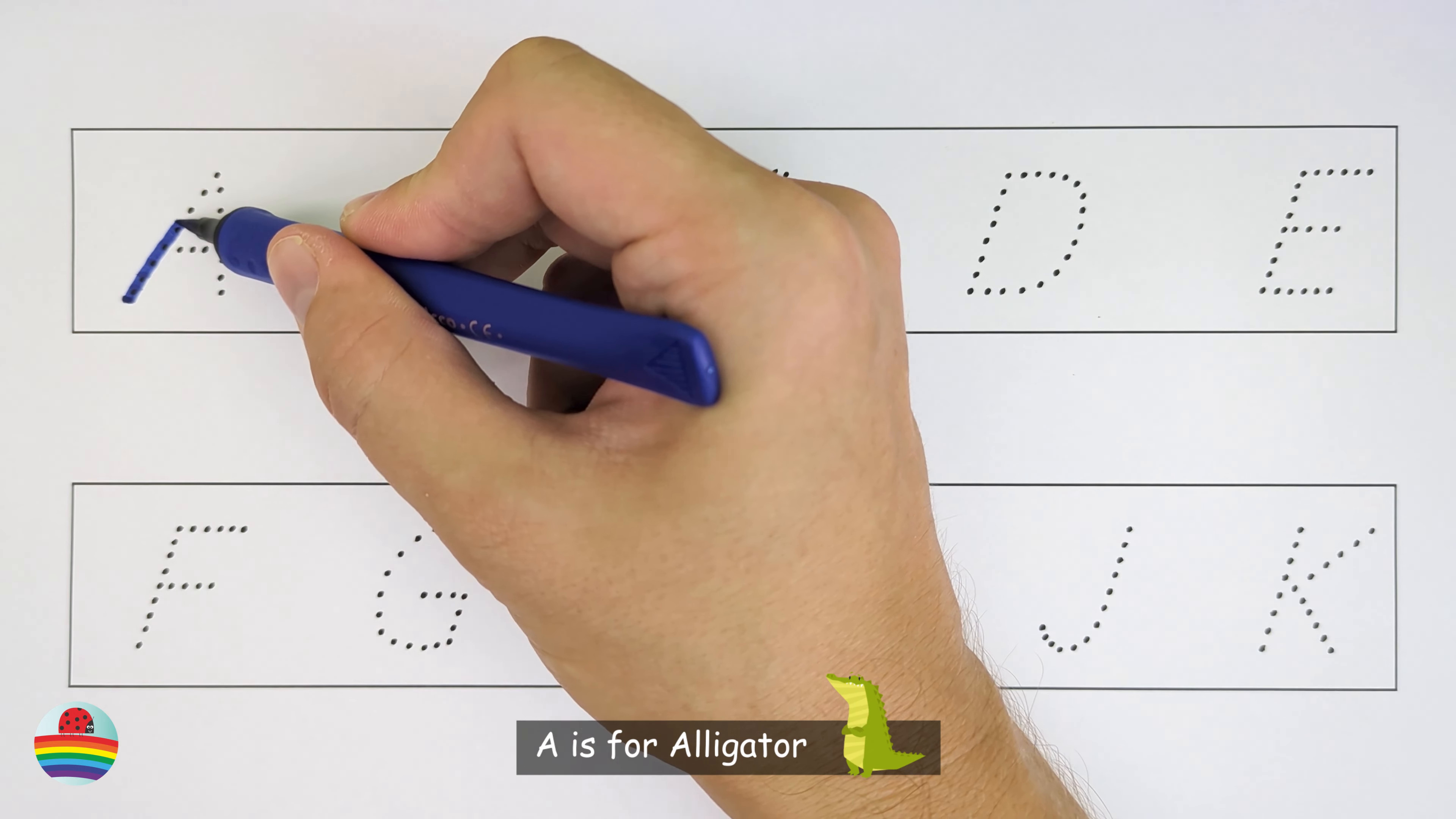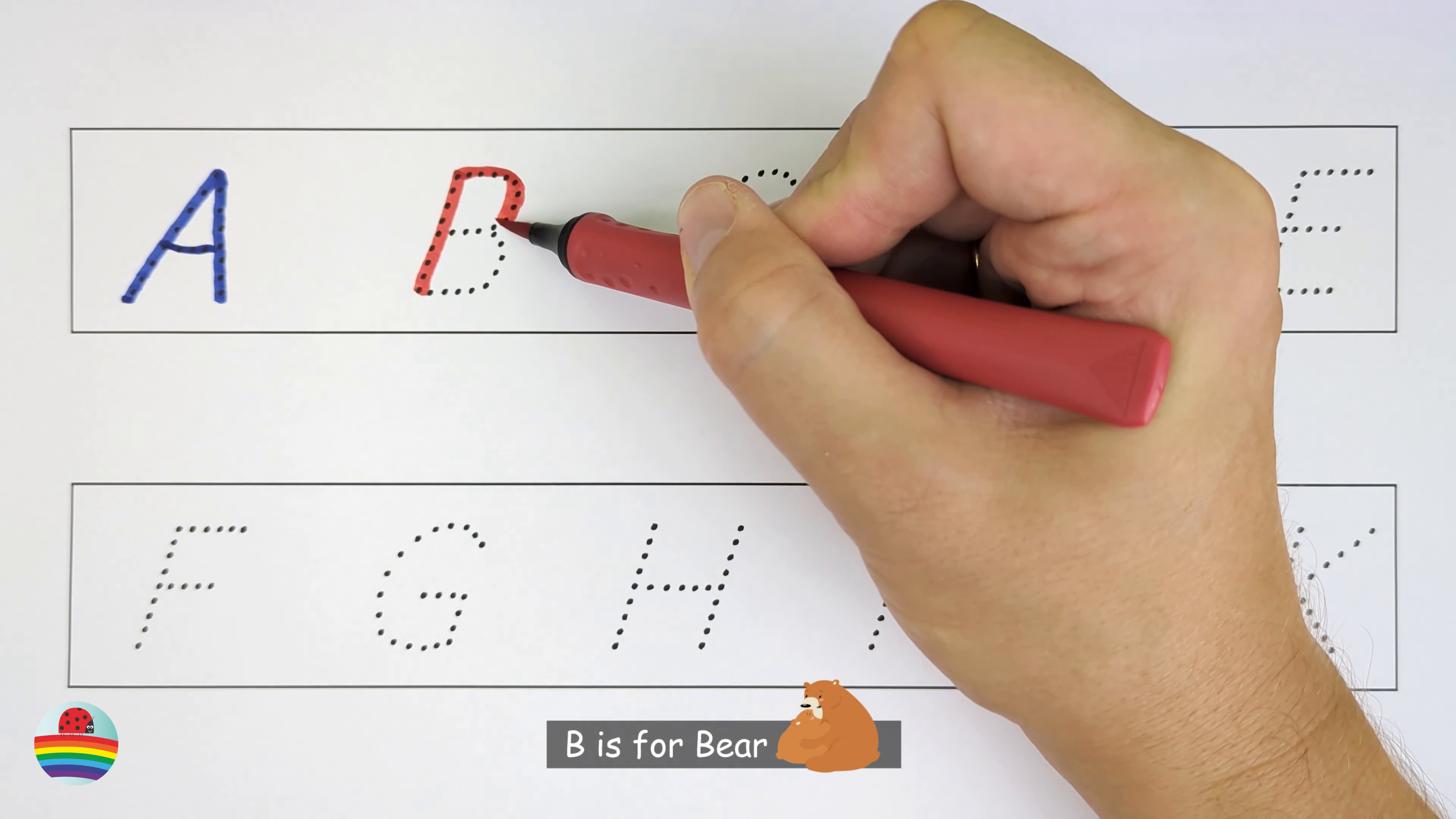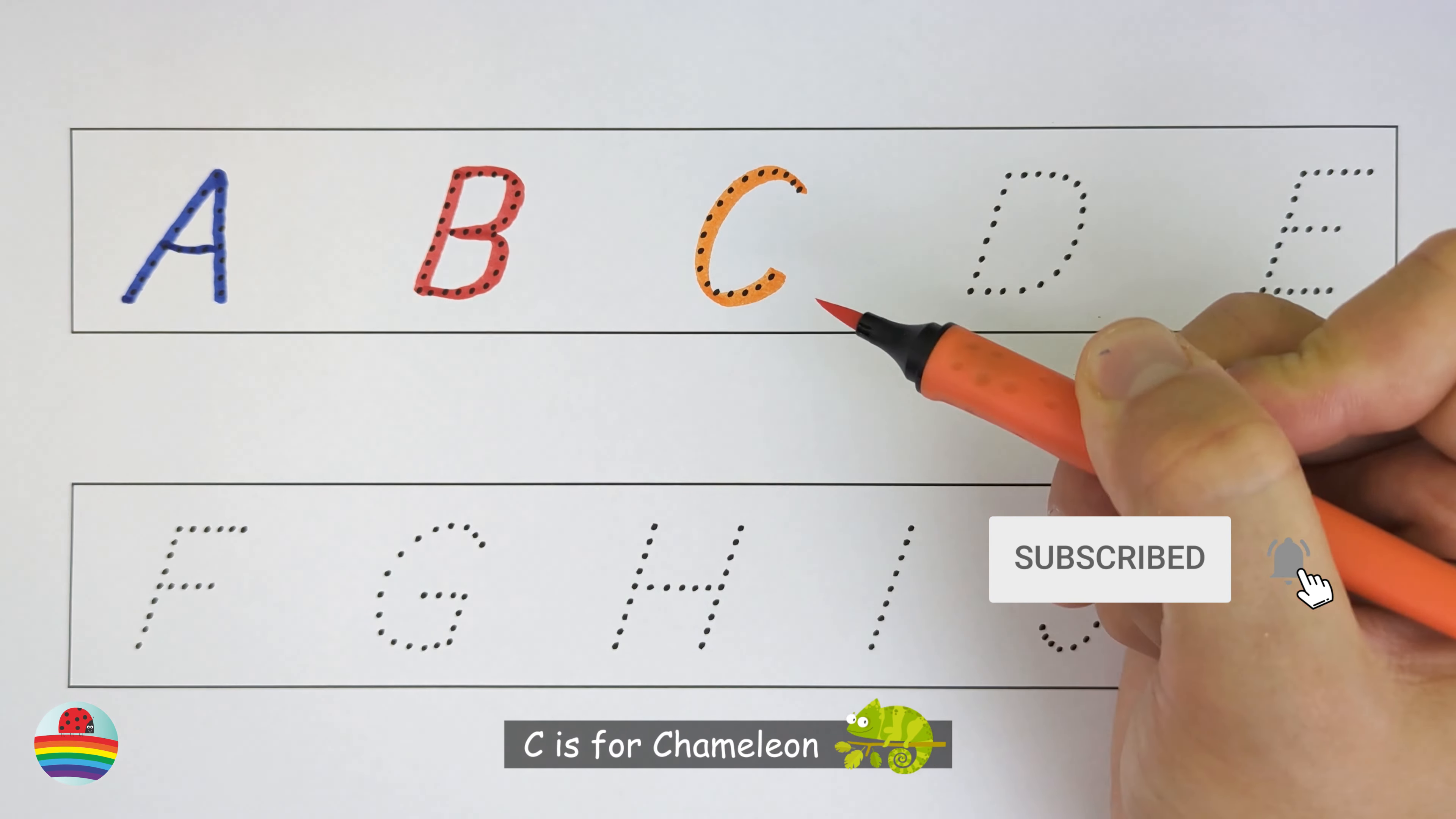A. A is for alligator. A. B. B is for bear. B. C. C is for chameleon. C.